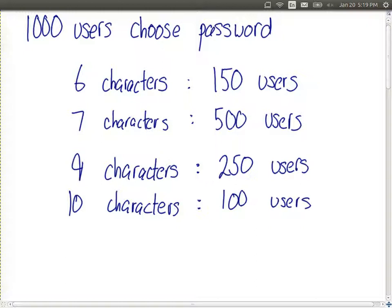So again, we have mutually exclusive events in this case in that a user cannot choose two different length passwords. And the set of events are exhaustive in that we have a thousand users and we cover all those 1,000 users in terms of selecting passwords.